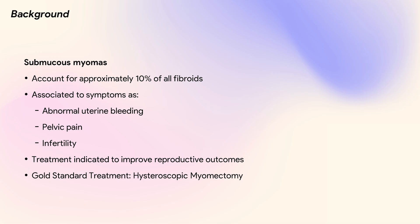Submucous myomas constitute approximately 10% of all uterine fibroids and are often associated with symptoms such as infertility, pelvic pain, and abnormal uterine bleeding. In the case of infertility, there is fair evidence that hysteroscopic myomectomy can improve reproductive outcomes.